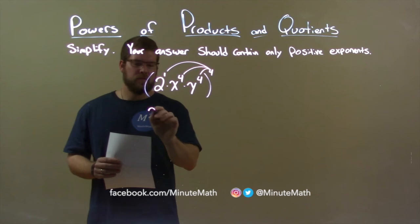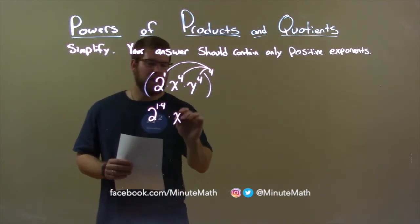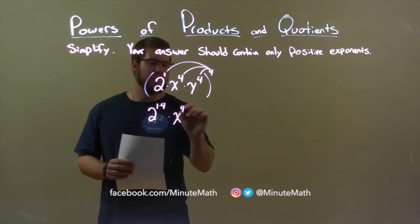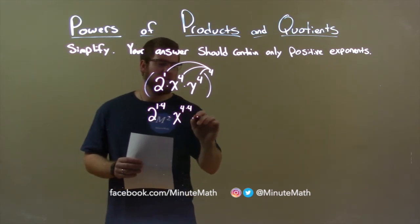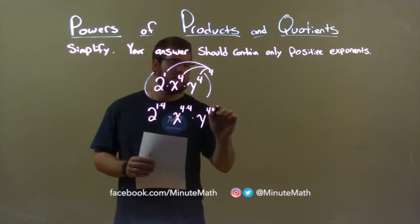So, 2 to the first is 2 to the 1 times 4 power, times x to the fourth power becomes x to the fourth times 4 power, and same thing with y. It becomes y to the 4 times 4th power. Big multiplication point right there.